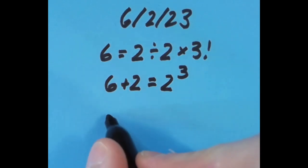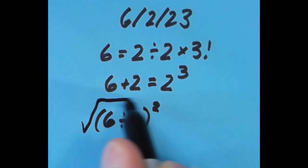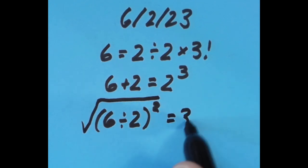And then lastly, with the equal sign in the final spot there, let's do 6 divided by 2 to get 3, take all of that and square it to get 9, and then take the square root of that 9 to get back to 3.